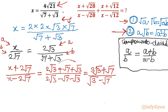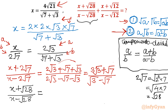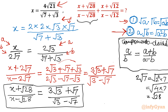Now I will use property 2: 2√7 = √(2² × 7) = √(4 × 7) = √28. So this gives us: (x + √28)/(x − √28) = (3√3 + √7)/(√3 − √7). I will call this equation number 1.